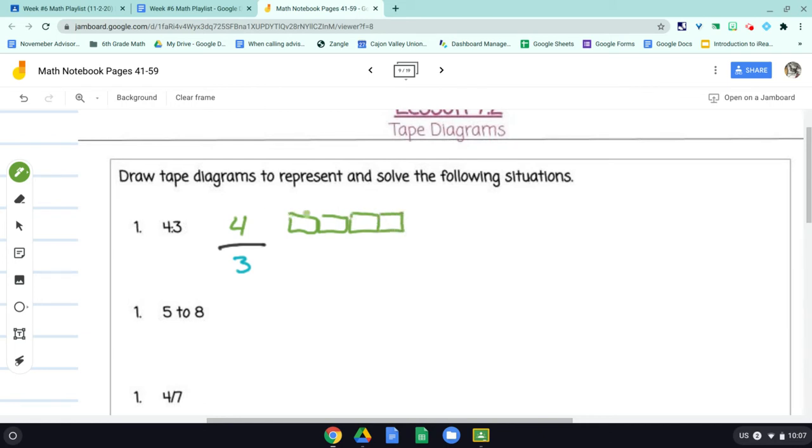4 pieces of tape to the 3 blue. Okay. And I could shade that in if I wanted to, but this is basically it. You've got 4 green pieces of tape or blocks, if you want to call it that, compared to the 3 blue pieces of tape. You can see that the 4 is larger. Okay. So there's our first situation.